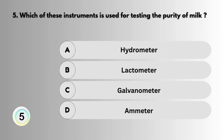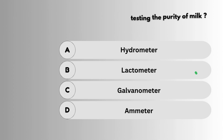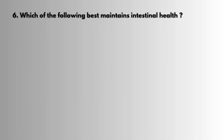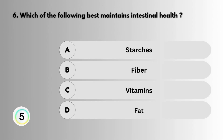Question 5: Which of these instruments is used for testing the purity of milk? Answer: Lactometer. Question 6: Which of the following best maintains intestinal health? Answer: Fiber.